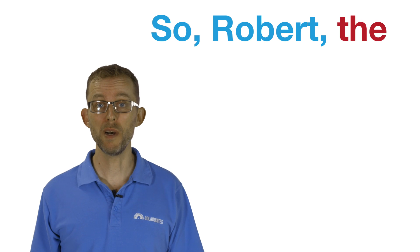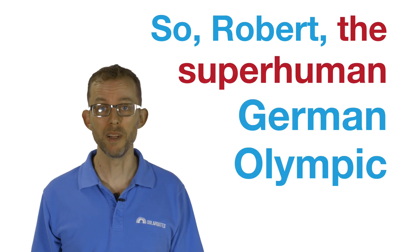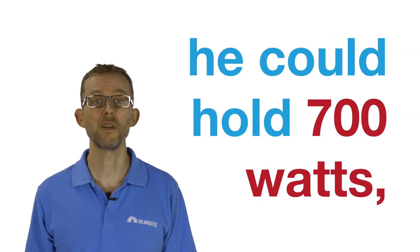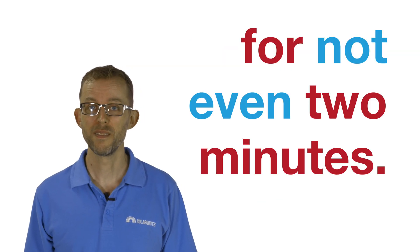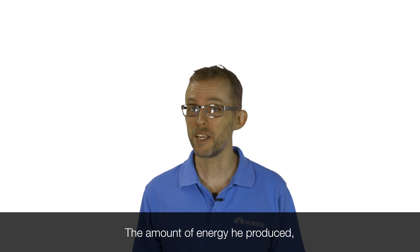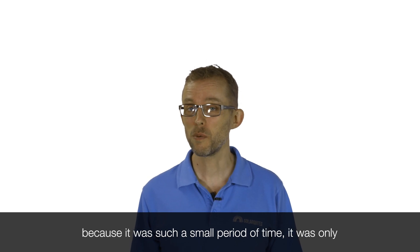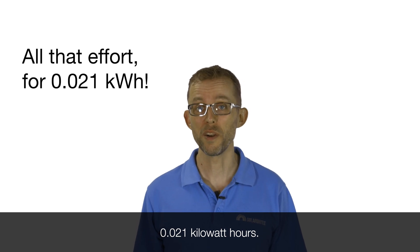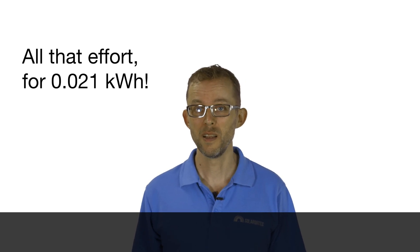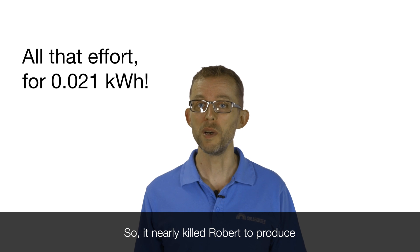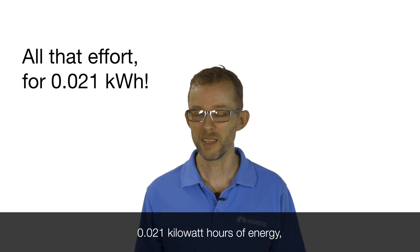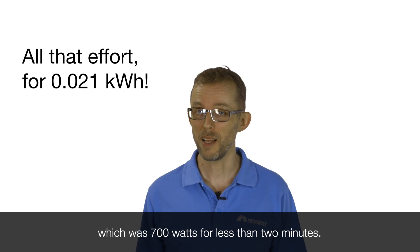So Robert, the superhuman German Olympic cyclist with the massive legs, he could hold 700 watts for not even two minutes. The amount of energy he produced, because it was such a small period of time, it was only 0.021 kilowatt-hours. So it nearly killed Robert to produce 0.021 kilowatt-hours of energy, which was 700 watts for less than two minutes.